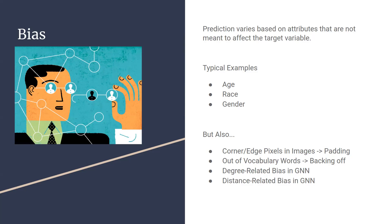In language models, out-of-vocabulary words are handled with back-off models to avoid misclassification. In GNNs specifically, the degree of a given node is a technical property that might introduce bias, as is the distance of a given unlabeled node to a labeled node in a semi-supervised setting. So bias is not only about social attributes, but can also be related to technical properties of a given architecture.